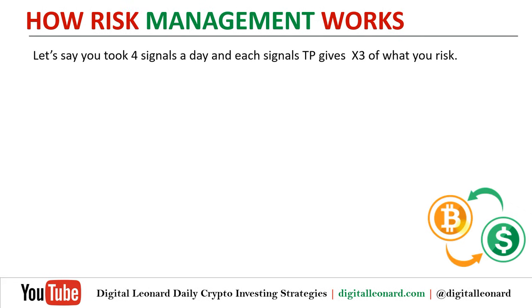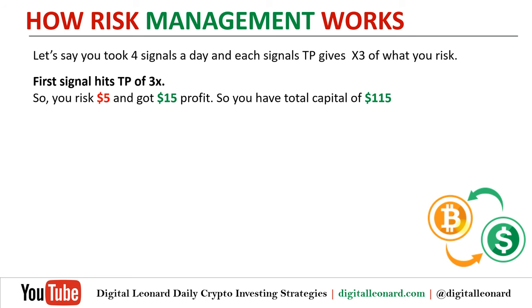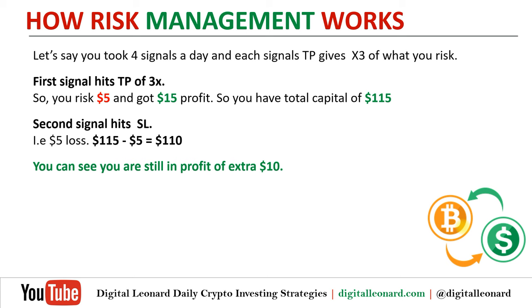Let me show you how this saves you. Say you took four signals in a day and each gives you between 2x to 3x. For the first signal, let's assume it hits TP and gives you three times what you risked — five dollars — so you get fifteen dollars profit. Your account is now at one hundred fifteen dollars. The second trade hits stop loss. You entered it with five dollars, so you lose five dollars, and your account is still up by ten dollars over your starting balance.